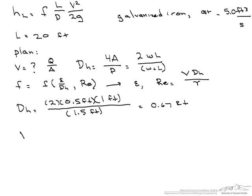Next, we need to find our average velocity, which is our Q, 5.0 feet cubed per second, divided by our area, which is 0.5 feet times 1 foot, and that equals 10 feet per second.